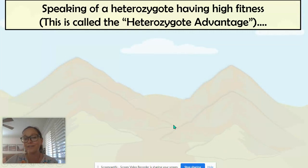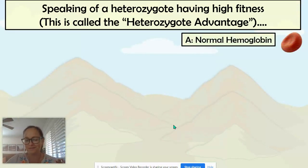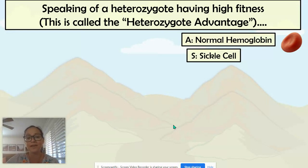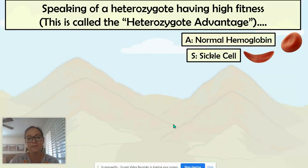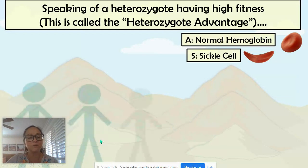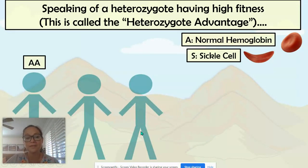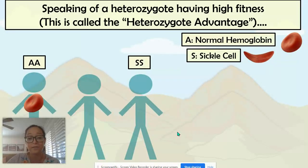Speaking of the heterozygote having high fitness, this is called a heterozygote advantage. There's a trait called sickle cell anemia, and it comes down to a mutation in the hemoglobin gene. A person with a normal allele would create normal hemoglobin shapes with round red blood cells. However, this mutation is a missense mutation that causes the hemoglobin to form straight chains within the blood cell — causing the blood cell to take on a sickle shape. If a person is homozygous for the sickle cell allele, all of their genes have directions to build that mutated hemoglobin molecule.